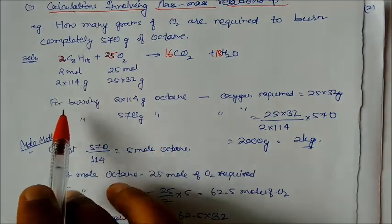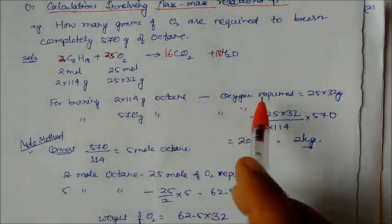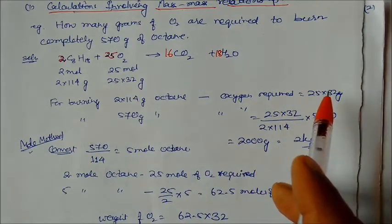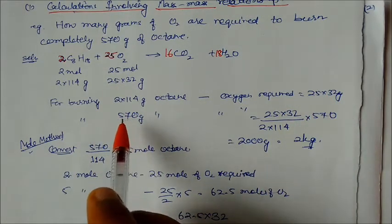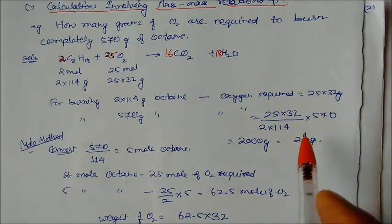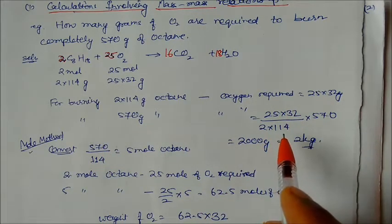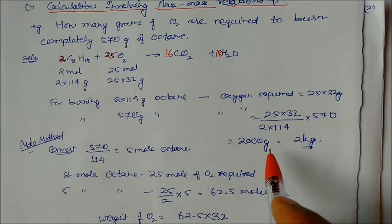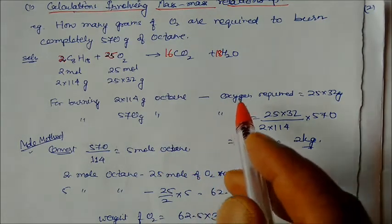For burning 2 × 114 grams of octane, we require 25 × 32 grams of oxygen. Since we are given 570 grams of octane, we calculate: (25 × 32) / (2 × 114) × 570 = 2000 grams of oxygen. So 2000 grams, or 2 kilograms, of oxygen is required.